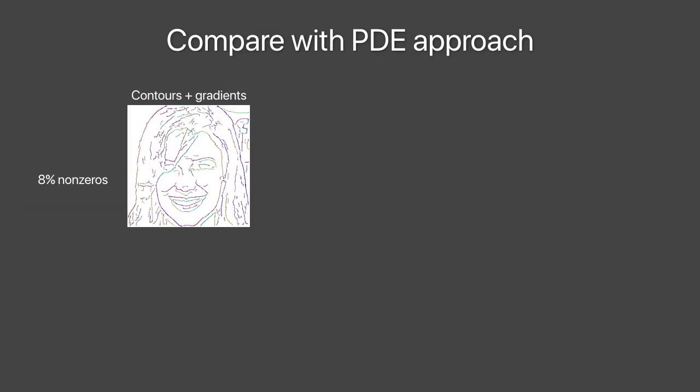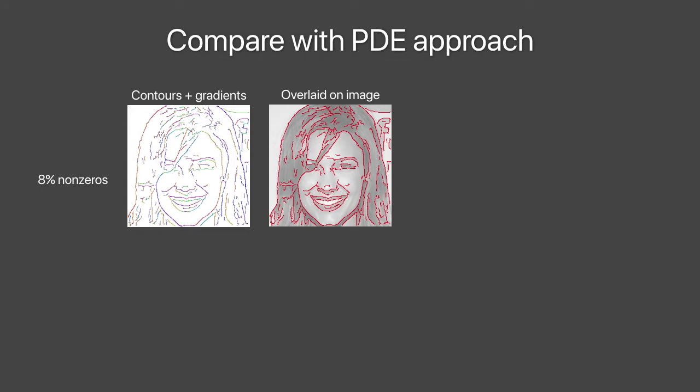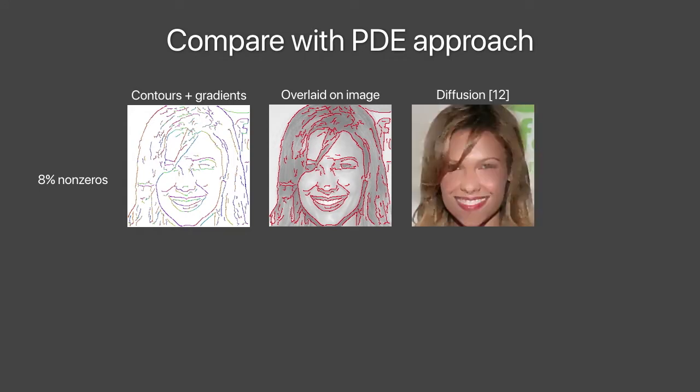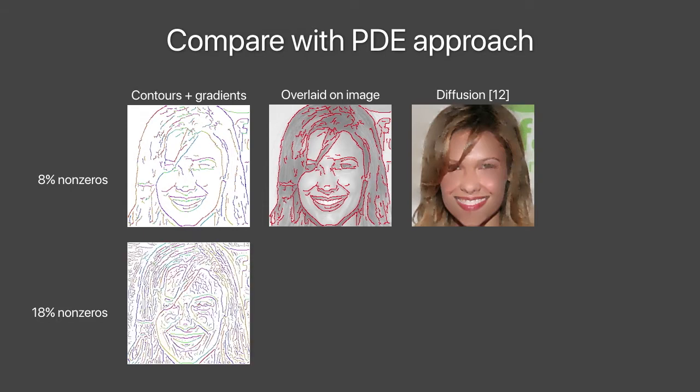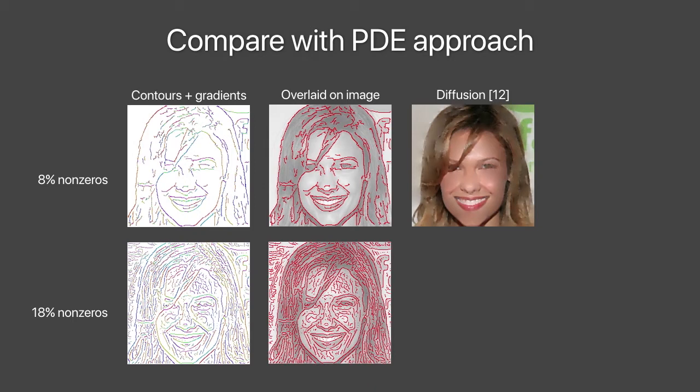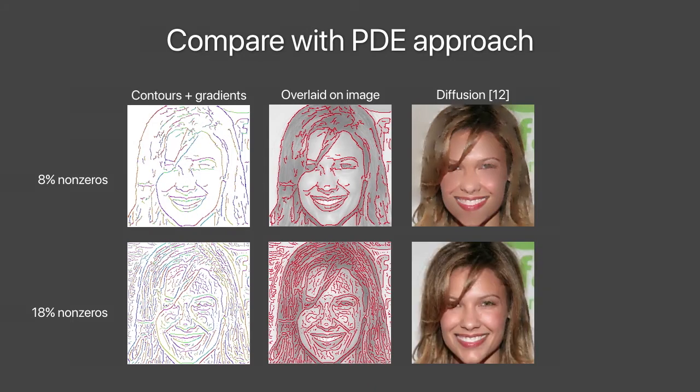Contour representation has been studied in the literature of diffusion-based methods for image compression and editing, but such methods cannot synthesize texture. Thus, when the contours are sparse, the reconstruction is overly smooth. Better reconstruction can be obtained through denser contours, but these contours are difficult to manipulate.